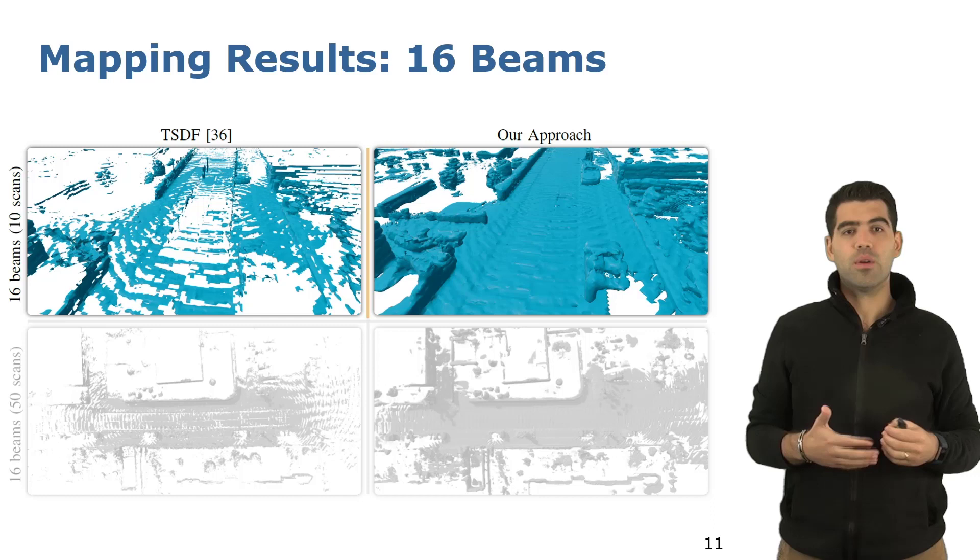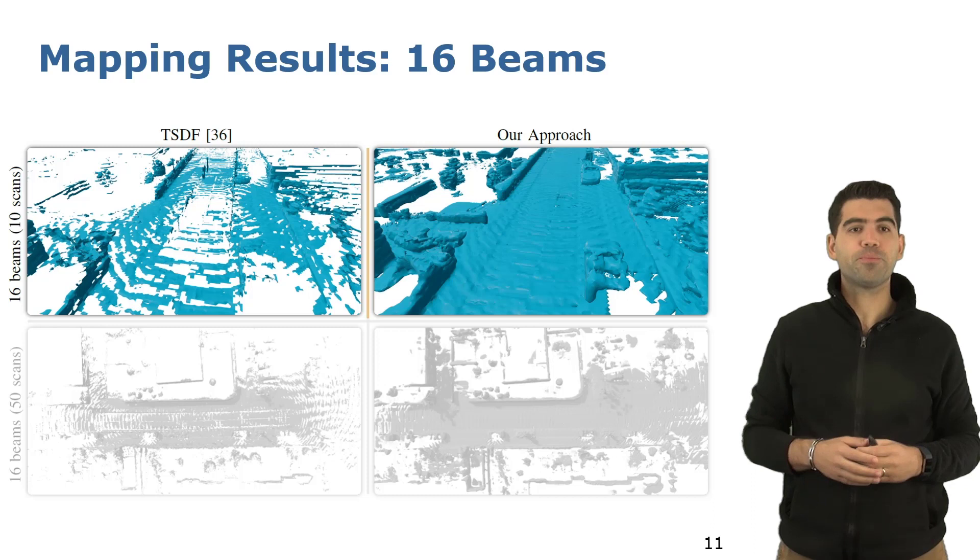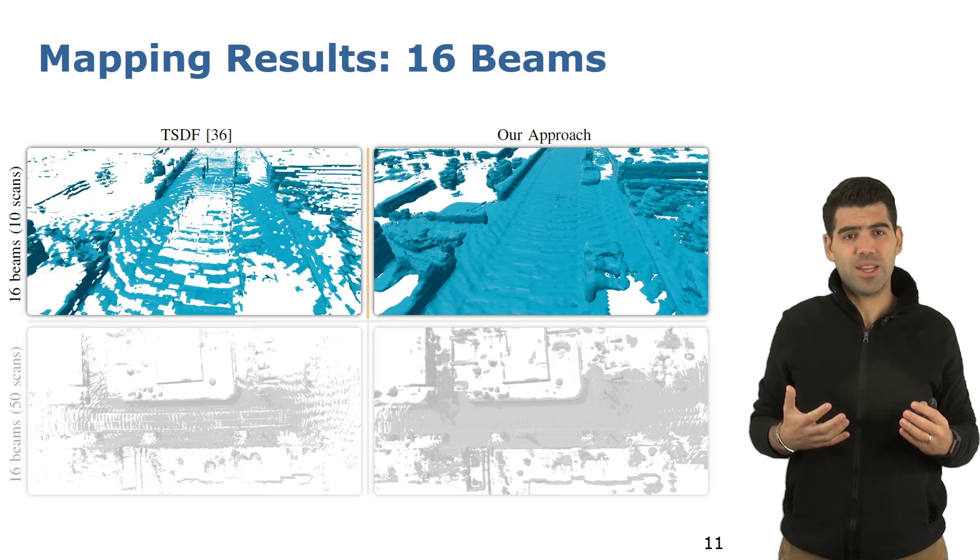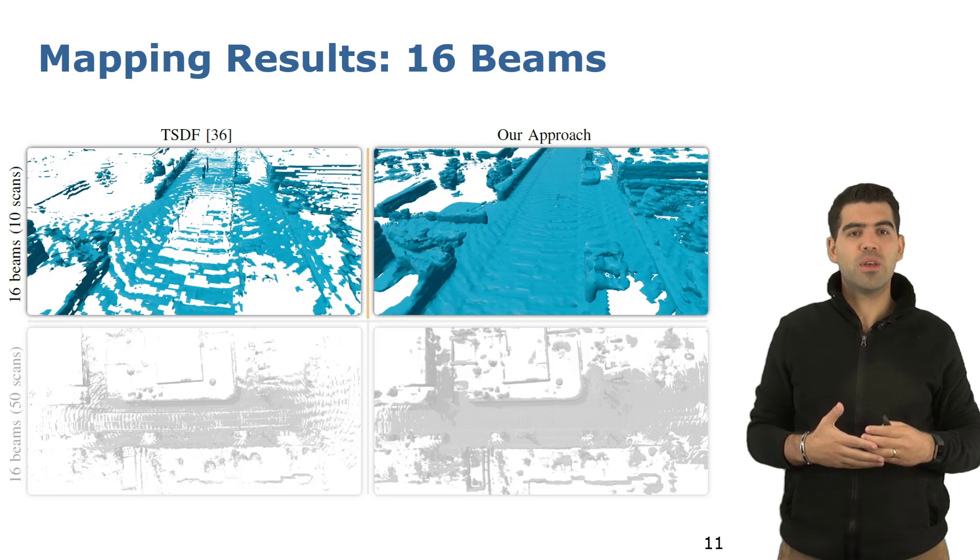Here, we show the results of our approach in an autonomous driving scenario. On the top left of the figure, we plot the resulting map after integrating 10 low-resolution scans into a traditional TSDF pipeline. As seen here in the map, the results are rather sparse, they contain holes and fail to reconstruct important objects such as parked cars. Therefore, it might be challenging to use this map for robotics tasks.